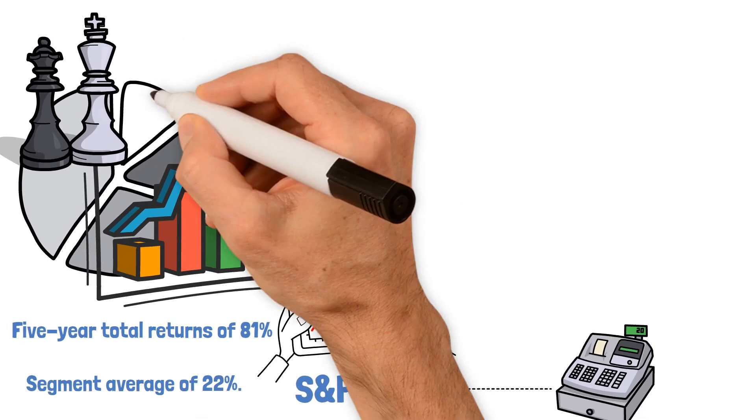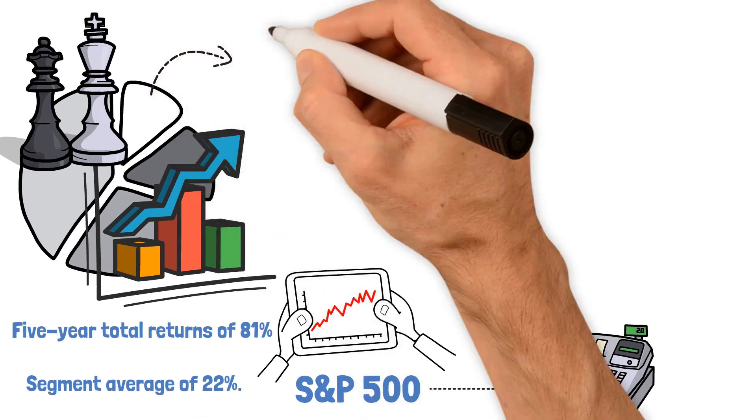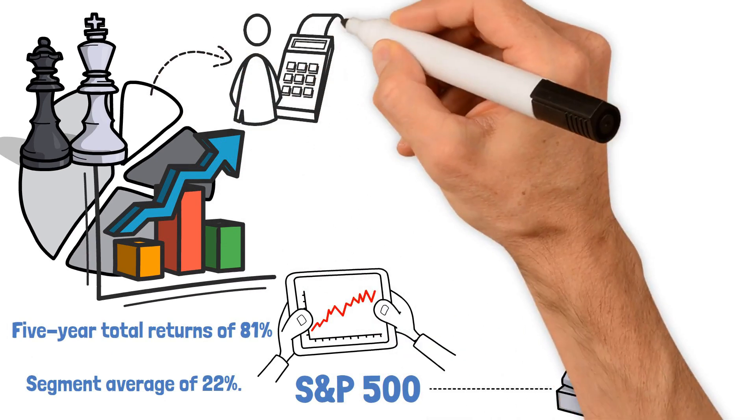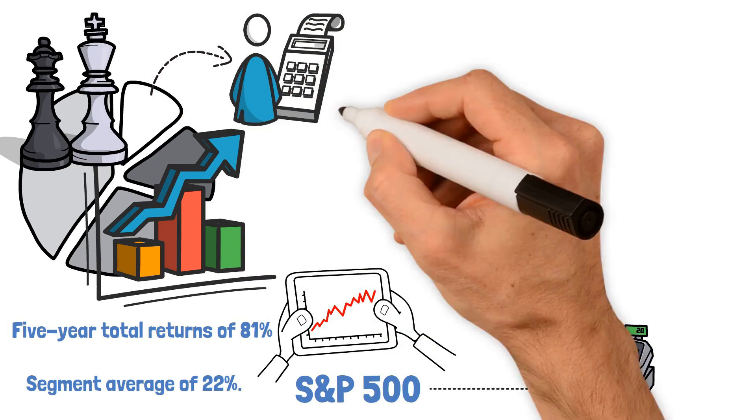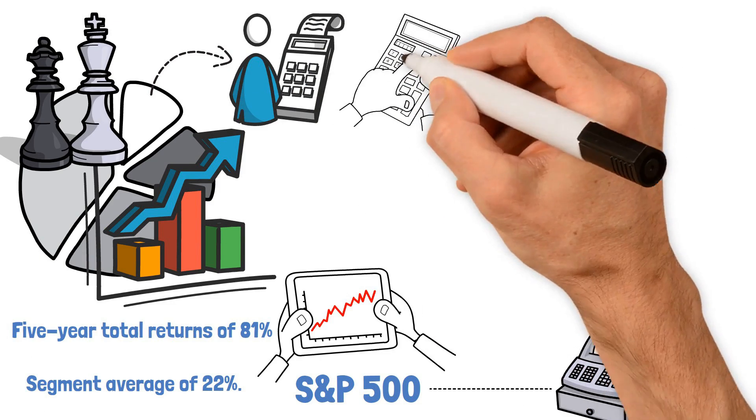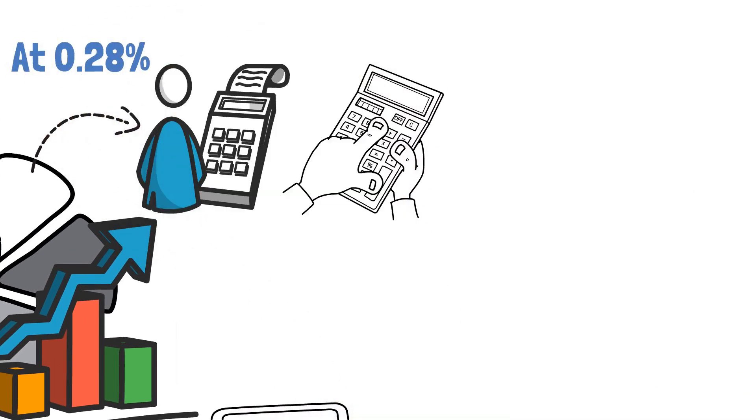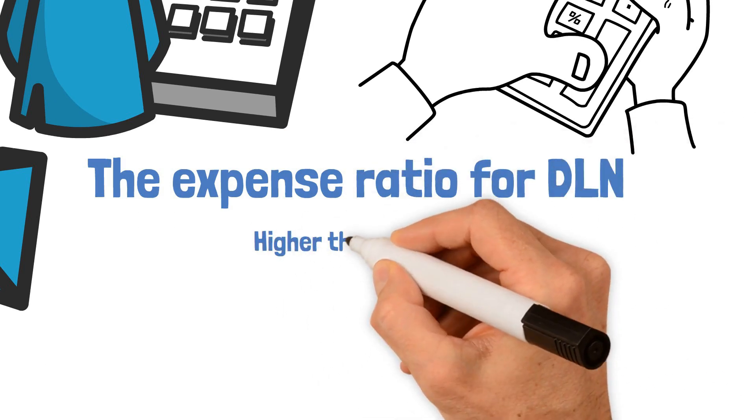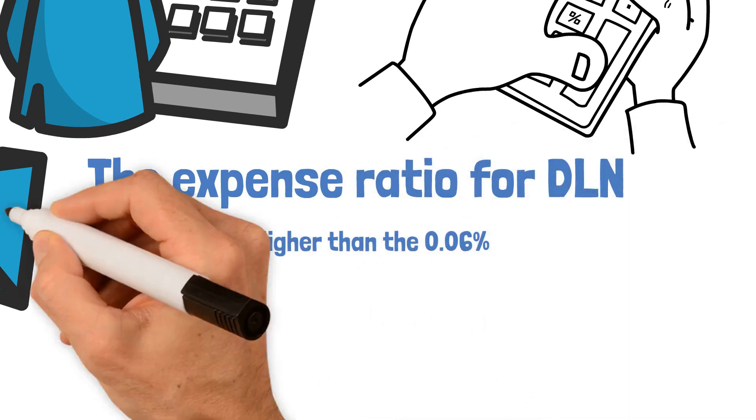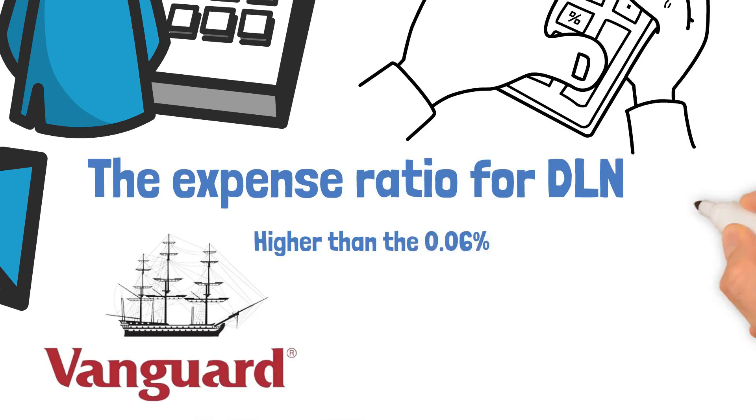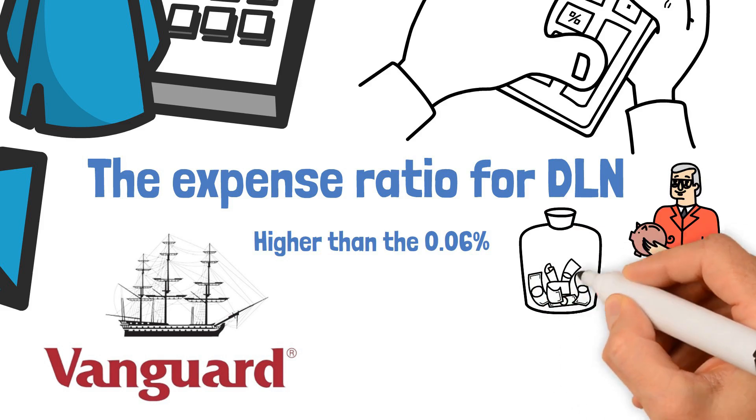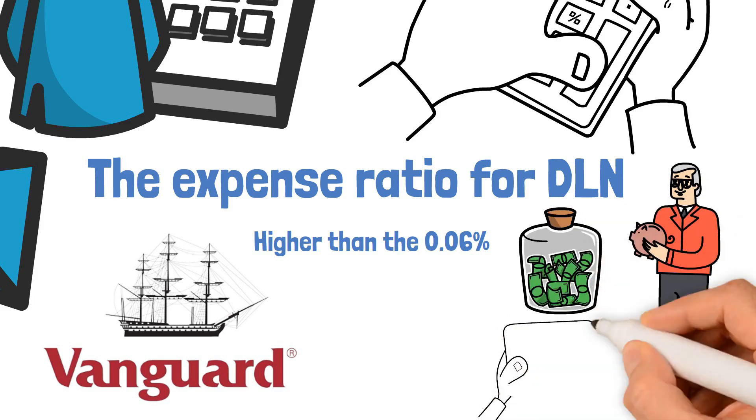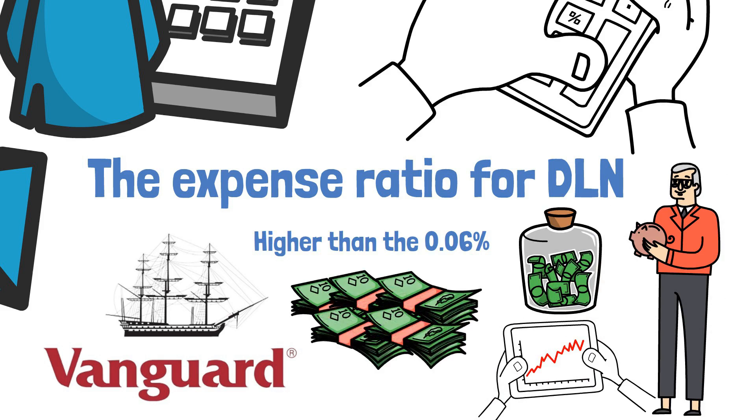further underscoring the fund's ability to deliver competitive returns while emphasizing the importance of dividends in a well-rounded investment strategy. It is essential to acknowledge that higher total returns come with a slightly higher expense ratio when compared to some other ETFs in the market. At 0.28%, the expense ratio for DLN is indeed marginally higher than 0.06% offered by Vanguard's ETF as mentioned earlier. However, for investors who prioritize a dividend-focused approach over market cap weighting, the potential for higher total returns can compensate for the slightly higher expense ratio.